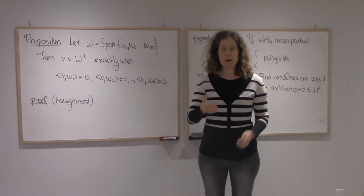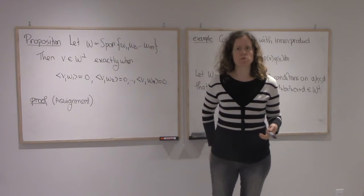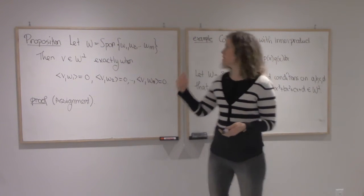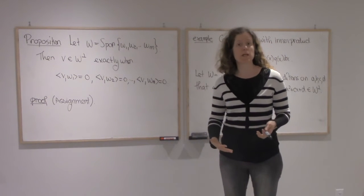Last video we defined the orthogonal complement of any subspace and we did two examples in R2. So in this video I want to do an example with a more complicated vector space with a more complicated inner product.